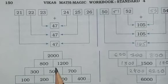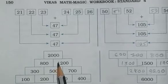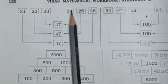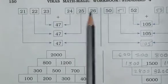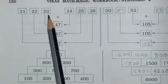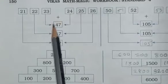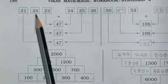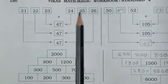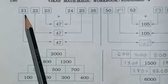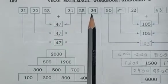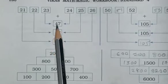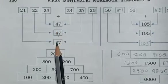Next, page number 150. Numbers 21, 22, 23, 24, 25, 26. तो यहां पर टोटल करेंगे हम. दोनों का टोटल होगा: 47. 22 plus 25 is 47, and 21 plus 26 is equal to 47. यानि तीनों का answer same होगा.